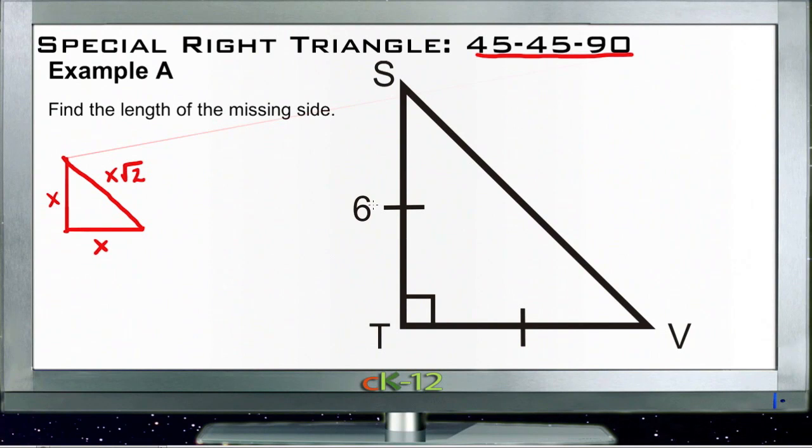For our example here, we have our two legs are 6. We have one of them marked as 6, and the other one is obviously the same because the two sides each have one hash mark. So that means this side over here is also 6. So the hypotenuse of that triangle then is 6 square roots of 2, and that's it.